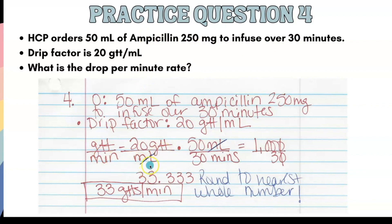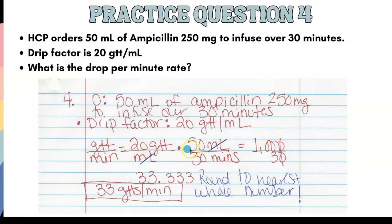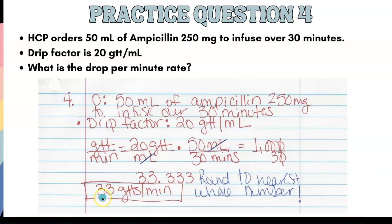So: 20 drops over one ml times 50 mls over 30 minutes. We multiply across — 20 times 50 is 1,000 divided by 30, or 100 divided by 3. We get 33.333... The correct answer is 33 drops per minute because .3 is not greater than five.